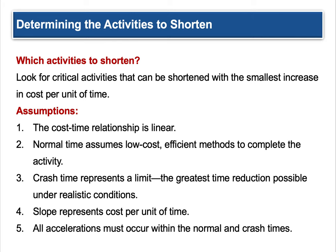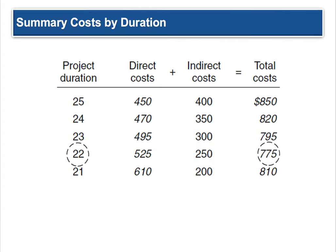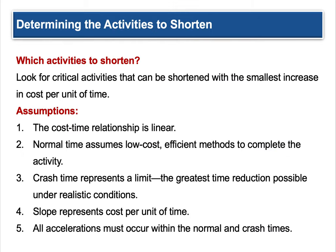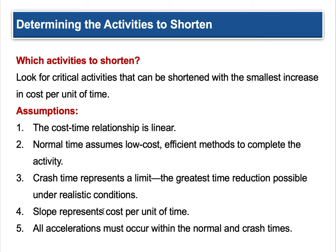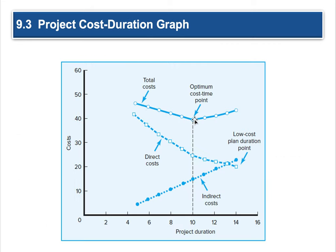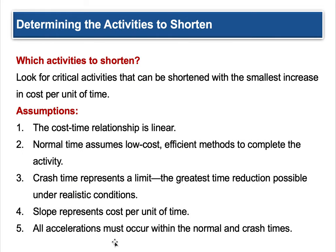You have to make some assumptions: the cost-time relationship is linear. Normal time assumes low-cost, efficient methods to complete the activity. Crash time represents a limit — the greatest time reduction possible under realistic conditions. Ideally you would end at this low-cost point; that is where you would crash it. The slope represents cost per unit of time. You look at the slope: costs are coming down, it bottoms out at the low point, then costs start going up. Graphs are your friend — they tell a story just by looking at them. All accelerations must occur within normal and crash time.